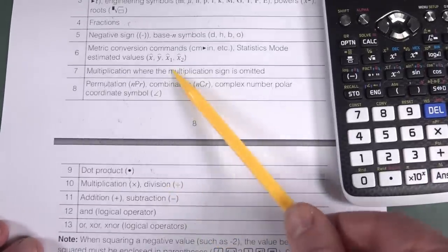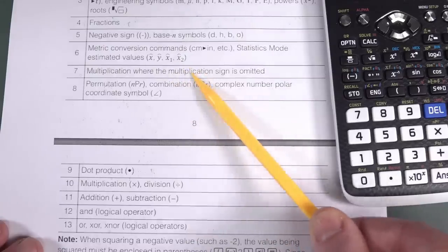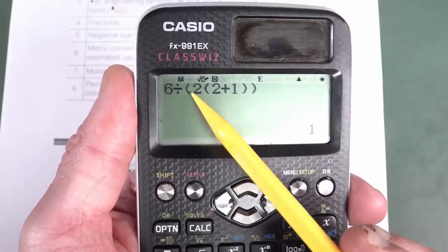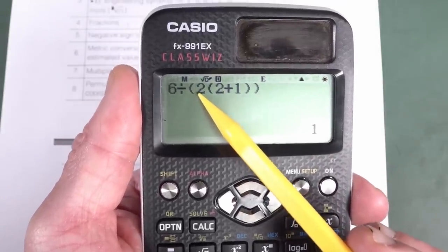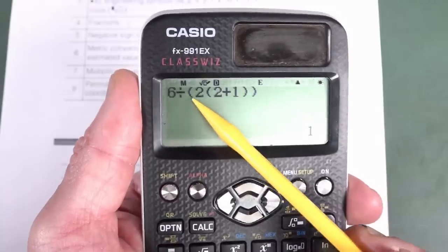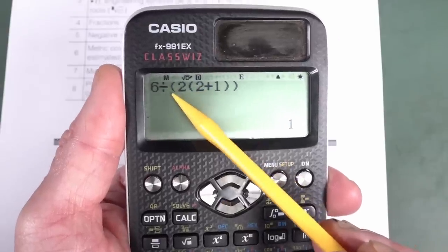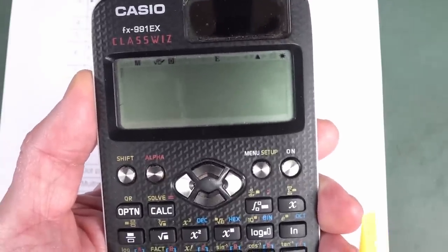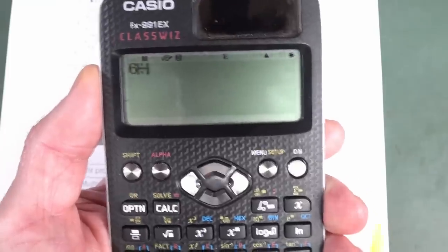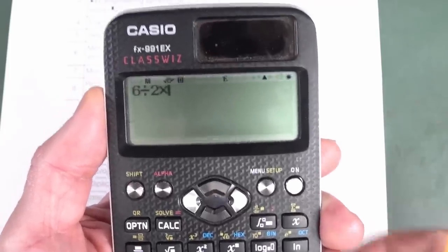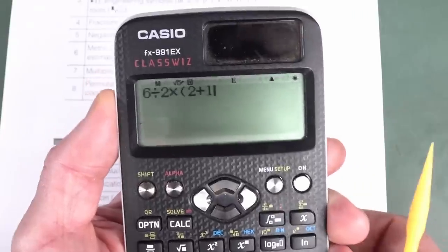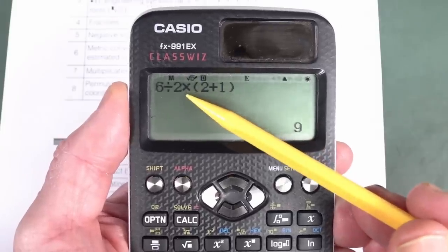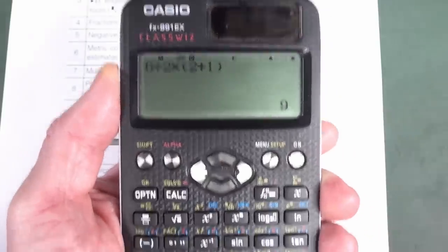So you can see that implied multiplication actually has a higher priority than just regular multiplication. Which is why it inserts an extra parentheses there because it's telling you specifically that it has a higher priority. It gives a higher priority to the implied multiplication than it does to the division.